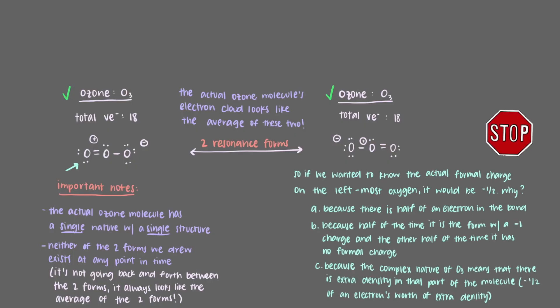So if we wanted to know the actual formal charge on the leftmost oxygen, it would be negative one-half. Why? That's right. The complex nature of ozone means that at all times, there is extra electron density in that part of the molecule. One-half of an electron's worth of extra density, to be specific. How is it possible, you ask?